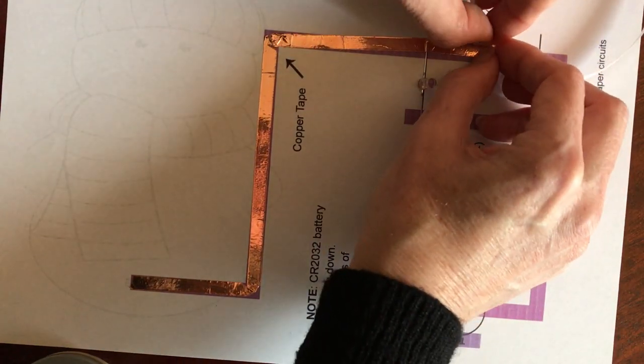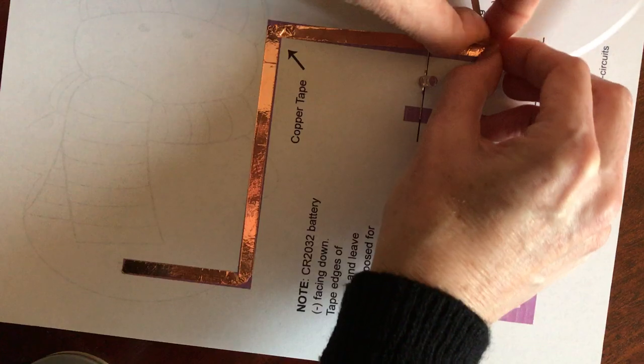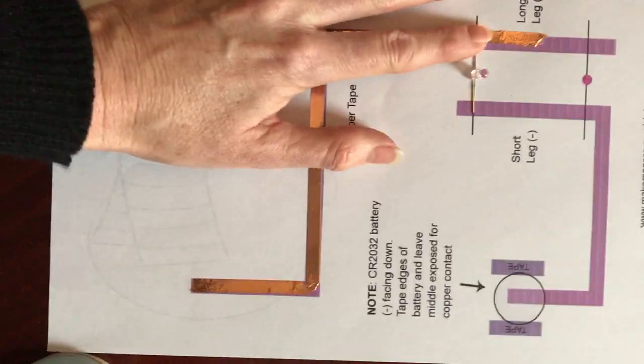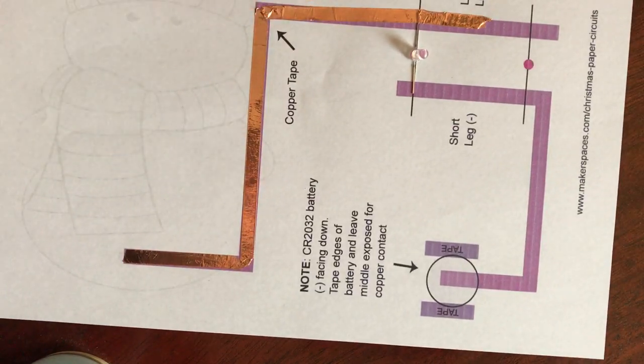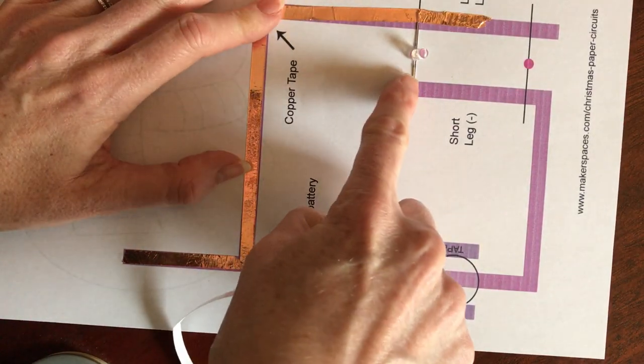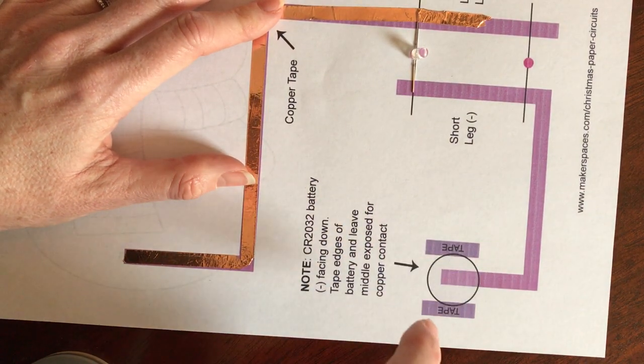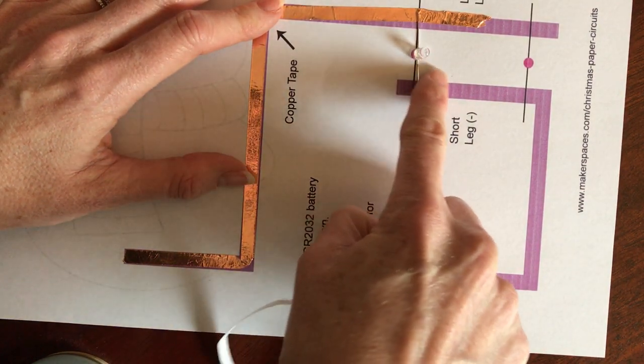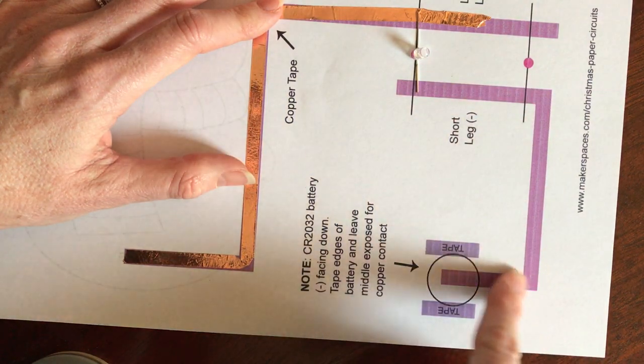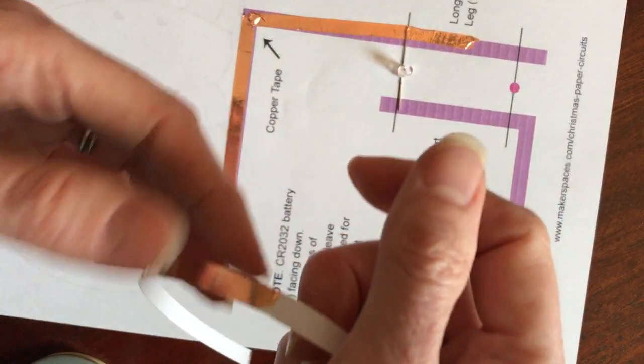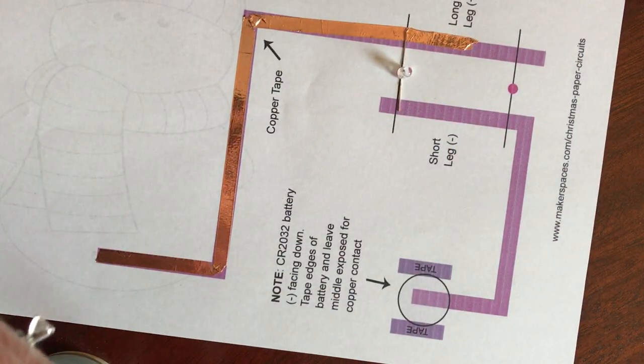And then, like I said, this tape tears really easily. So even if I don't have scissors, I can go ahead and just like tear that off. Because I'm just going to do my one LED. Then you're going to do the same thing along here. Do not put your battery down. Put your copper tape down first all the way along the line and make sure it's nice and tight and secure.